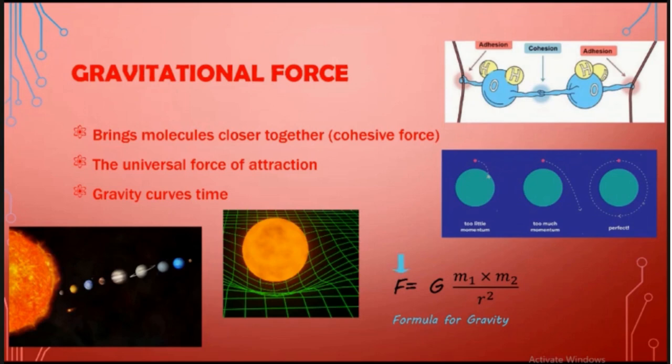F stands for force. G stands for the gravitational constant. The gravitational constant is multiplied by M1 and M2, which is basically the masses. M1 and M2 multiply each other and they are divided by R squared. R squared is basically the distance between the centers of the masses.